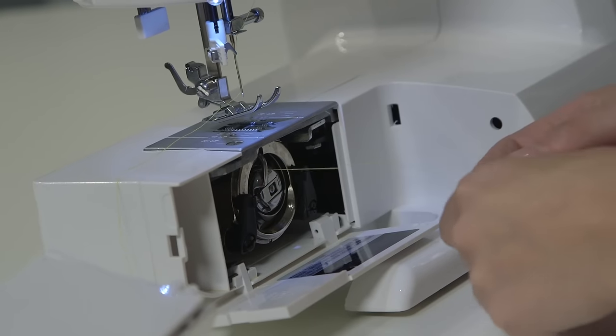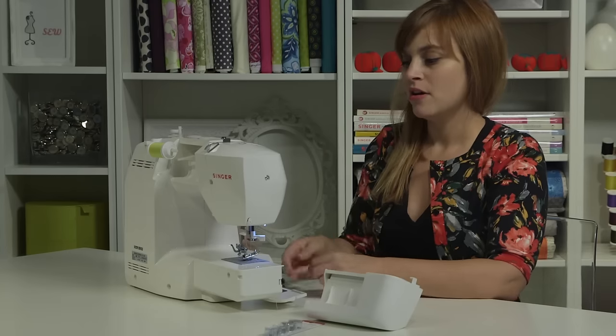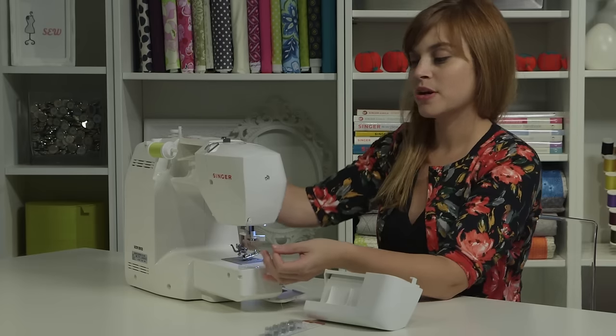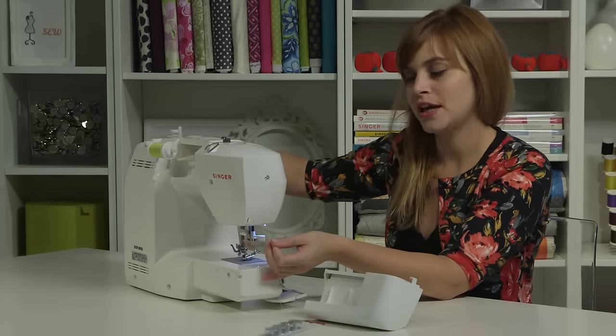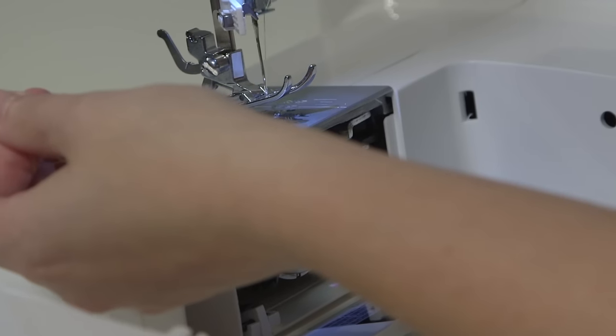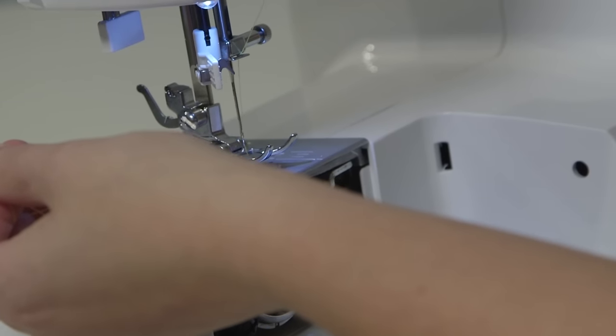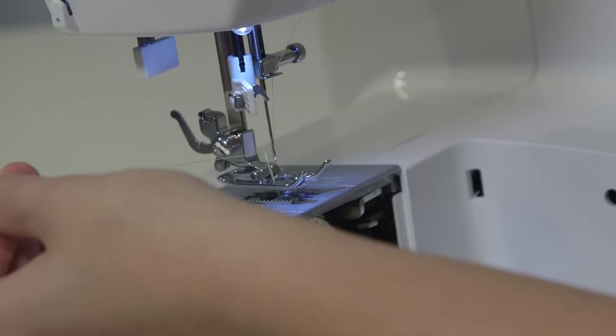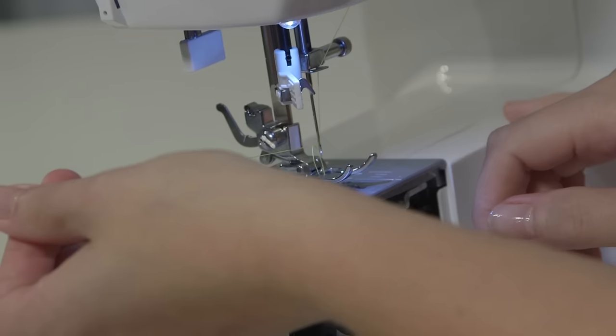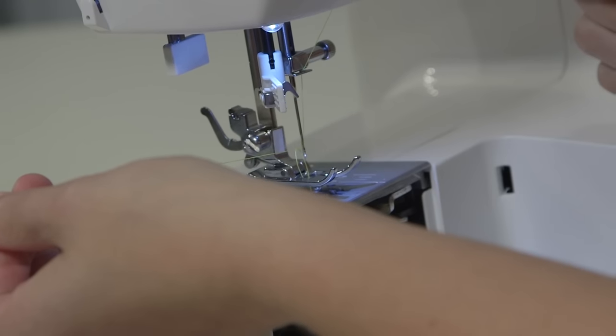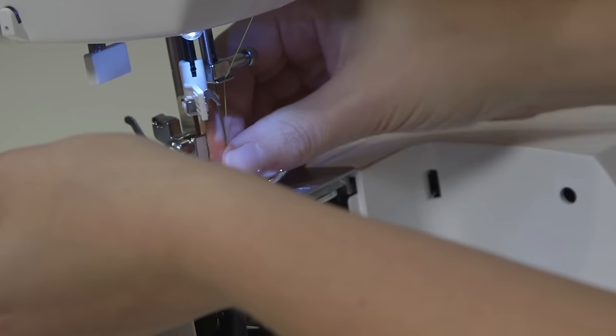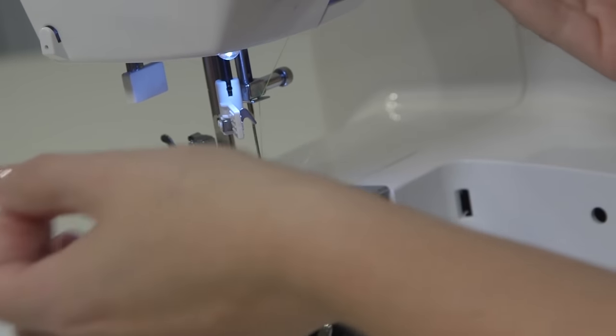The very final step is drawing up the bobbin thread. We're going to do that with the upper thread. So we'll hold onto the upper thread with our left hand, and we're going to hand crank through one full stitch. So that means we're going to hand crank until the needle goes all the way down and comes all the way back up. When we do that, the upper thread is going to grab the bobbin thread and pull it up as a loop. If you don't see that loop, make sure that you're pulling with your left hand so that there's some tension on that thread, and it will pull the bobbin thread right up. You can then grab the loop and pull it the rest of the way through, just like that.